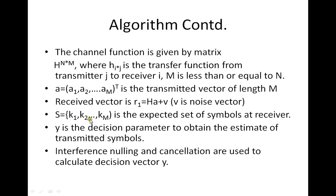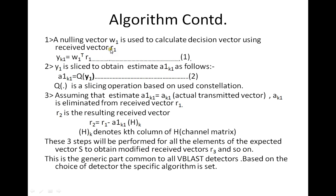You will have a decision parameter Y required to obtain the estimate of the transmitted symbols at the receiver. The interference nulling and cancellation steps are used to calculate this decision vector Y. To carry out nulling, a nulling vector W1 is used. YK1 = W1^T · R1 — that is, the received vector matrix-multiplied by the transpose of the nulling vector gives the decision statistic, which is then sliced to obtain an estimate of the transmitted signal.